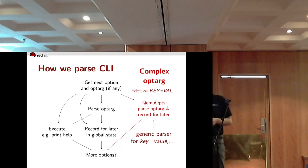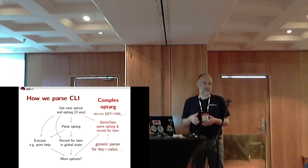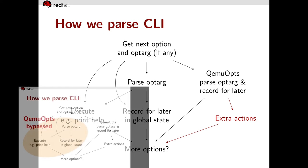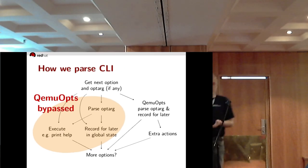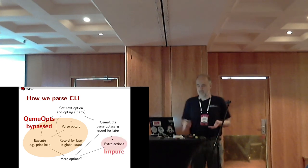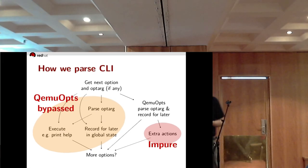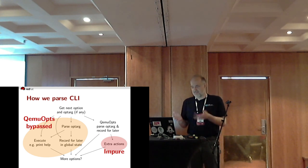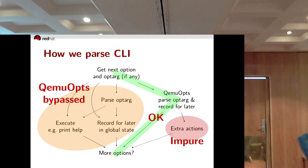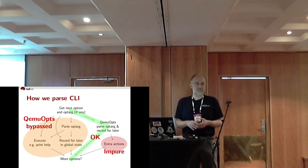QEMUopts parses a generic key-equals-value syntax and it always records for later. Of course we haven't been able to resist the temptation to additionally do a little action on the side — not in QEMUopts proper, but in the code using it. That is how command line parsing works since 0.12 until today. The old stuff is still around; all options that go through the orange cloud completely bypass QEMUopts. Options through the purple cloud are impure because of extra actions, and only options on the green straight and narrow path use QEMUopts as intended.